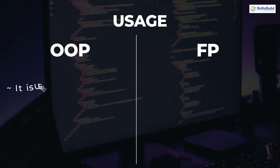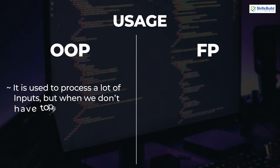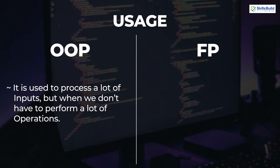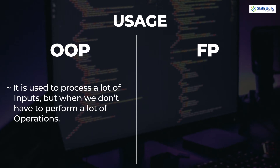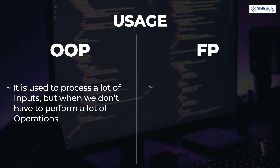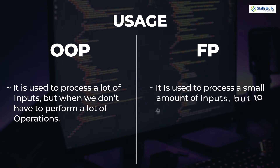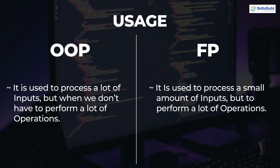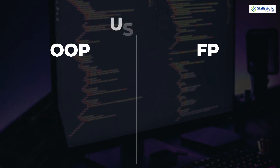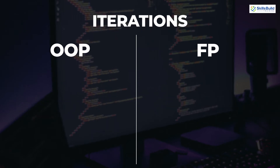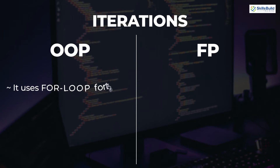In terms of usage, we use object oriented programming when we have a lot of inputs to process but don't need to perform a lot of operations. Functional programming is preferred when we have a small number of inputs but want to perform a lot of operations on them. For iterations, object oriented programming uses loops for iterative data, while functional programming uses recursion.